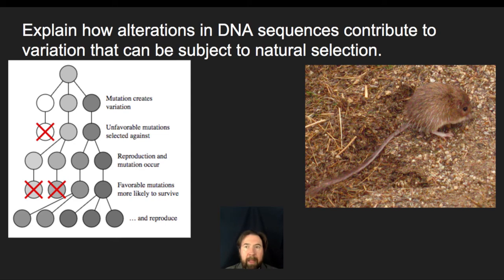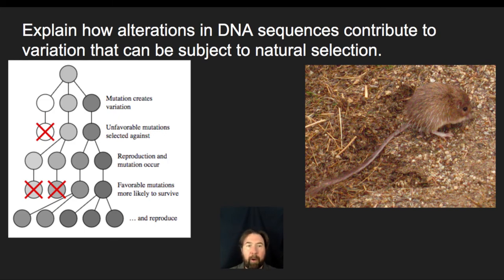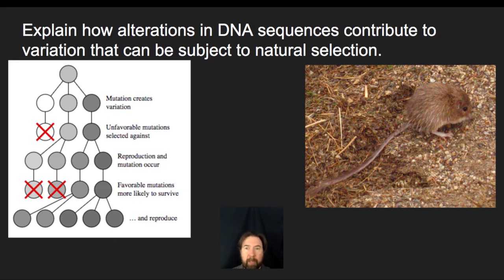On dark brownish dirt, mutations create variation, and then selective pressure is applied — in this case by predators. Lighter colored mice on a darker background stand out and are selected against. Those unfavorable mutations are selected against by predators, so lighter-furred mice are less likely to survive and reproduce. Variation doesn't disappear, but over time selective pressure works against those that don't blend into the environment. The more favorable mutations and phenotypes are selected for, and those most successful in the environment will survive and reproduce, leading to a population shift toward those favorable genotypes over time.